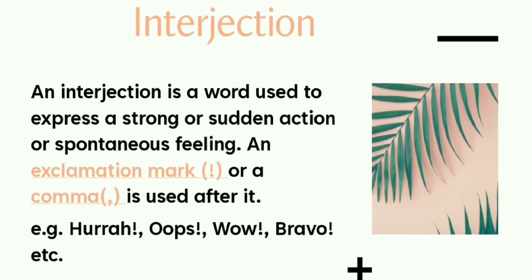What is an interjection? An interjection is a word used to express a strong or sudden action or spontaneous feeling. An exclamation mark or a comma is used after it.